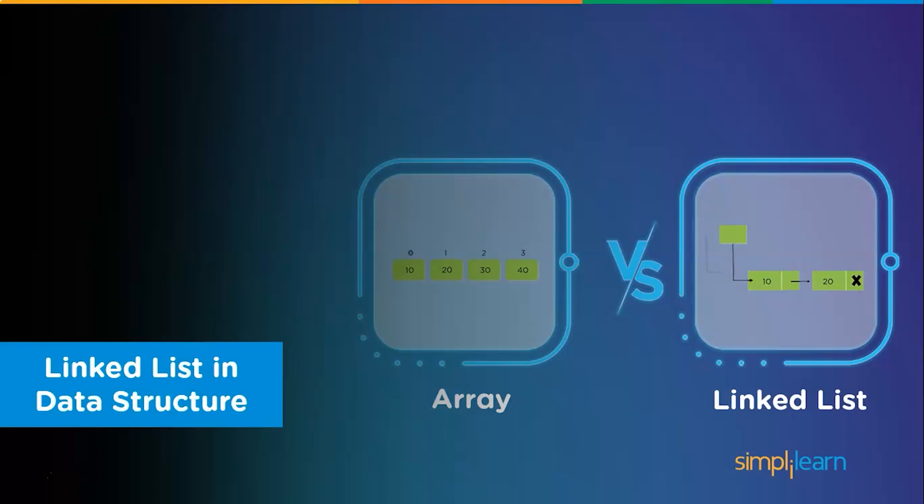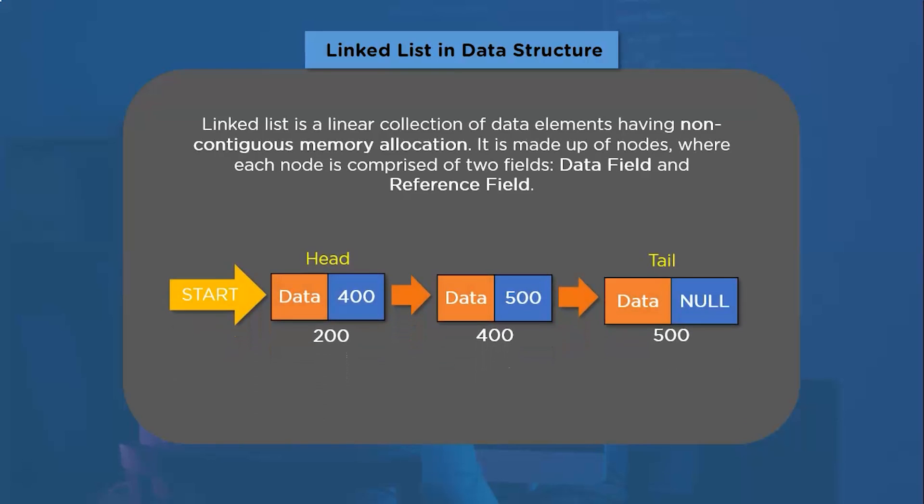On that note, let's discuss a few essential properties of linked list as well. The linked list is a collection of data elements that we call nodes. These nodes are stored at non-contiguous locations in memory. Additionally, each node contains two fields: one to store data and another to store the address to the next node or the reference to the next node.